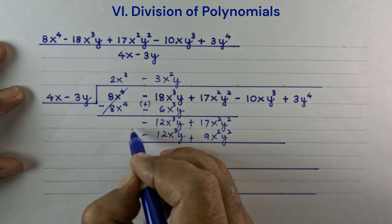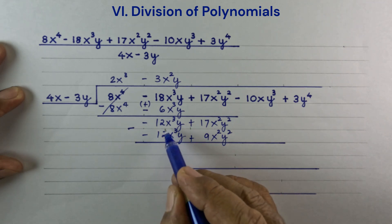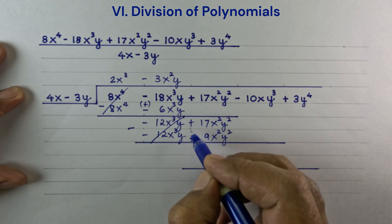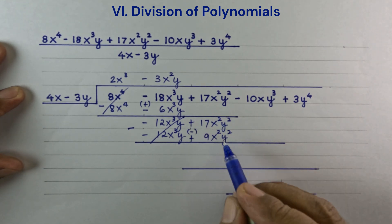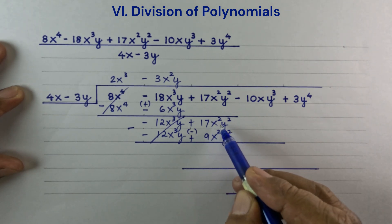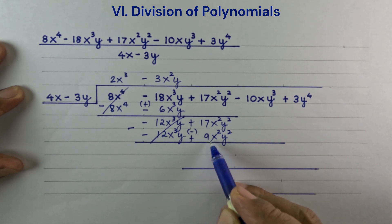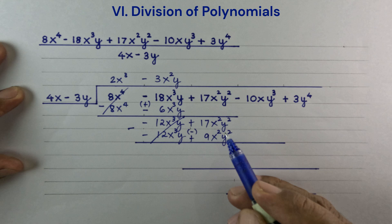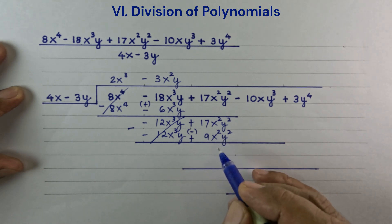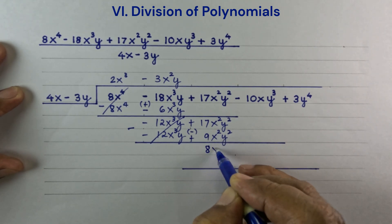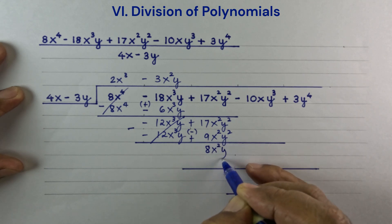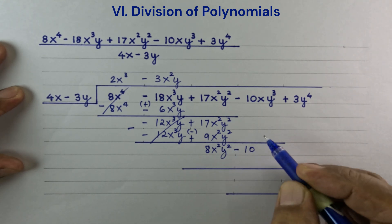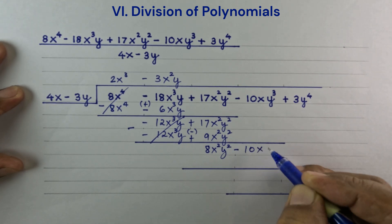Now let's subtract. Minus 12x cubed y cancels. The plus sign here becomes minus, so 17x squared y squared minus 9x squared y squared is plus 8x squared y squared. Now let's bring down minus 10xy cubed.